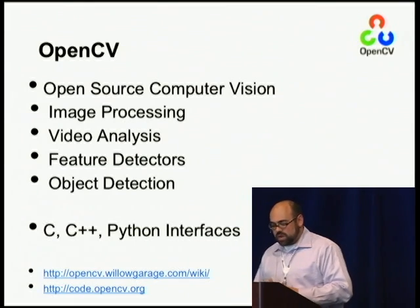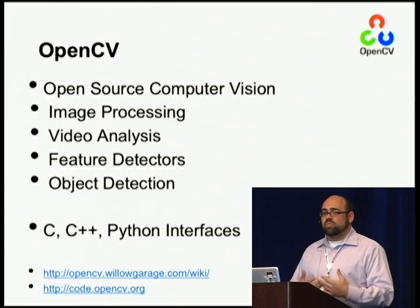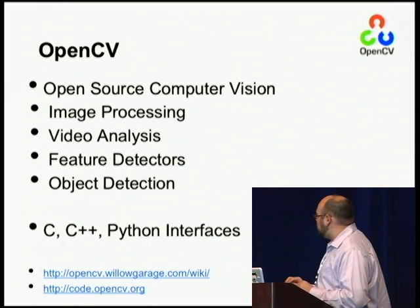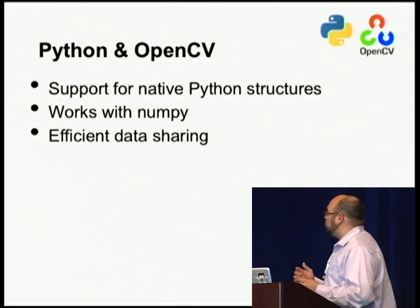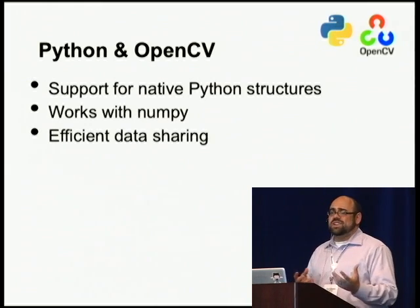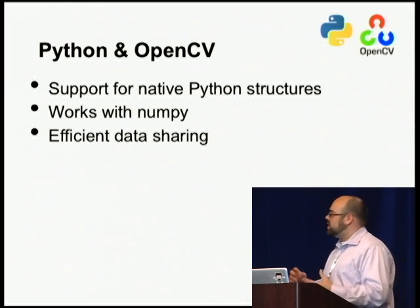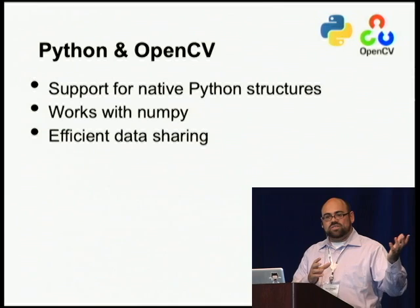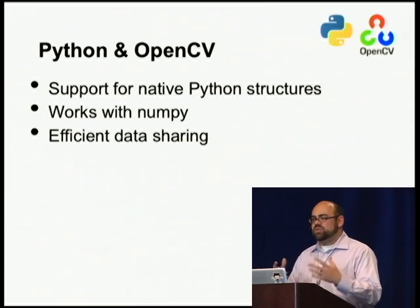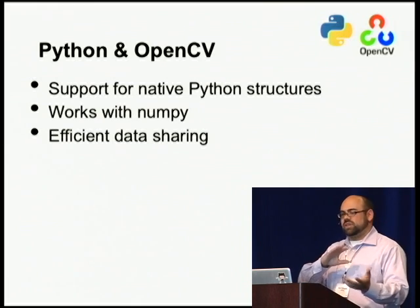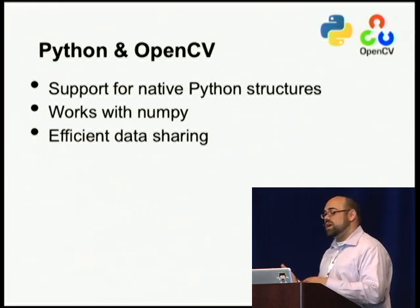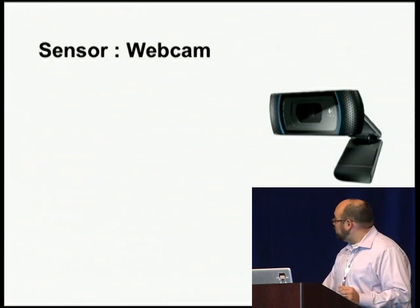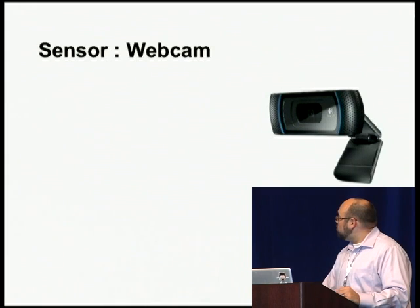I jumped in and picked up OpenCV. It's really popular and powerful with tons of computer vision algorithms ready to use — image processing, video analysis, motion detection. The big thing was its great Python support: you can use native Python structures, pass in tuples instead of their native CV data structures. It also works well with NumPy — I can take images, pass them to NumPy for offline analysis, and it does it efficiently without copying memory, so you don't take a huge performance hit. For a sensor, I just picked up a Yule webcam to get going.